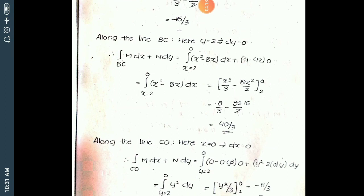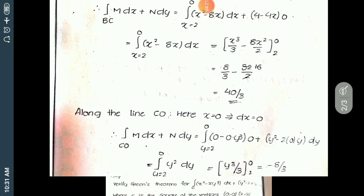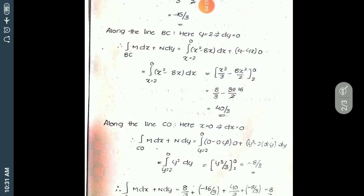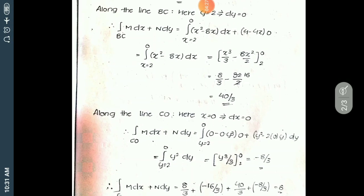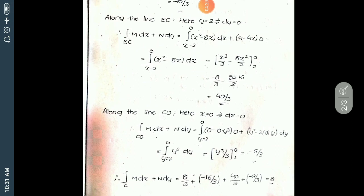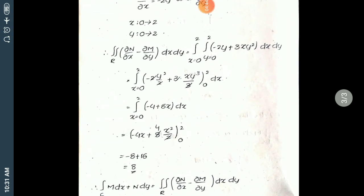Along line CO, x = 0 and dx = 0, so M dx + N dy gives the answer −8/3. Therefore, the complete line integral is the combination of all four lines, giving a final answer of 8. This completes the left-hand side integral.